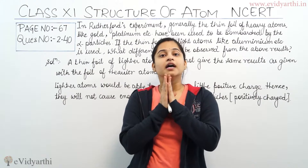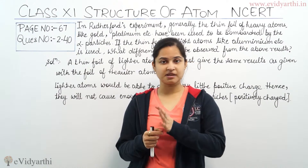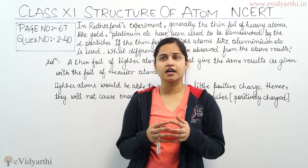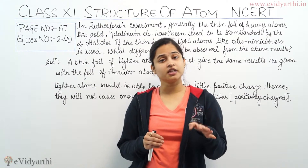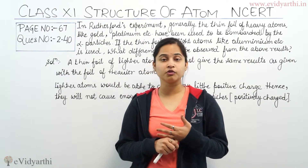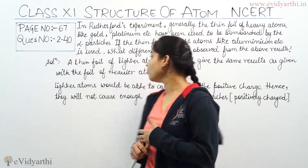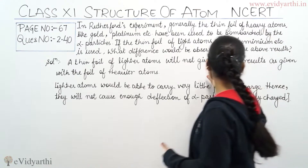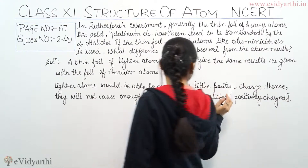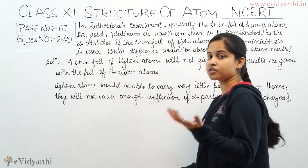The thin foil of heavy atoms like gold will not be a valid comparison here. A thin foil of lighter atoms will not give the same results as given with the foil of heavier atoms. Lighter atoms would be able to carry very little positive charge. Hence, they will not cause enough deflection of the positively charged alpha particles.